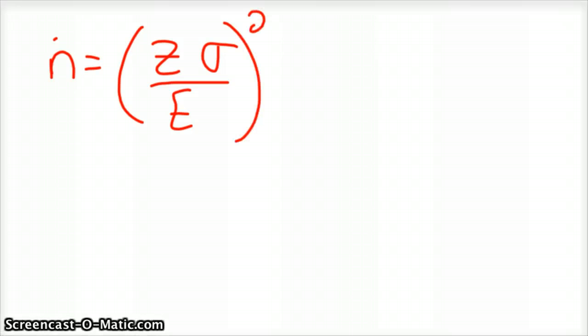So now we can plug that into the formula. So n is equal to your z-score times your standard deviation, divided by how much error we need, all squared.